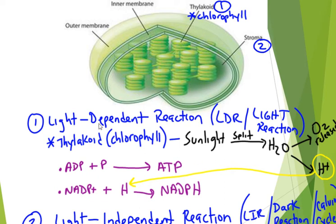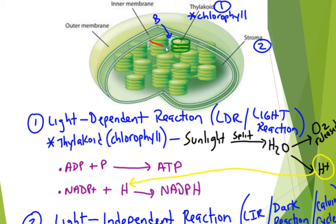Today we're going to wrap up photosynthesis. We talked about the light dependent reaction, known as the LDR or the light reaction, because that is what sunlight is involved in. The LDR takes place in the thylakoid — those green disks — where sunlight is trapped. Specifically, blue and red wavelengths from the visible light spectrum are trapped, while green light is reflected away. The whole purpose of the light dependent reaction is to create energy in the form of ATP and NADPH.